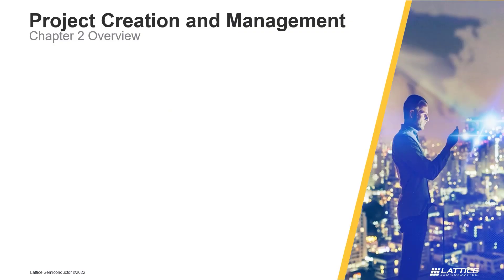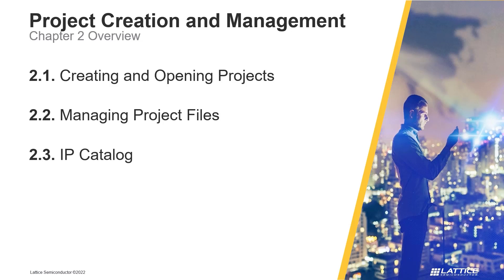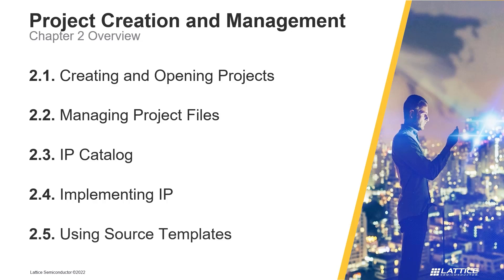Chapter 2 consists of five sections. In the first section, called Creating and Opening Projects, the general process for creating Radiant projects and opening existing projects are covered. In section 2, Managing Project Files, we will introduce Radiant's File List tab and discuss the basics of using it for file management. In the third section, called IP Catalog, we will discuss Radiant's IP Catalog and how it can be used to download and install IP. In the fourth section, Implementing IP, the general process for generating an IP component and instantiating it in a design are reviewed. Finally, in the fifth section, Using Source Templates, we will discuss Radiant's Source Templates tab and how it can be used to use source templates in Radiant projects.